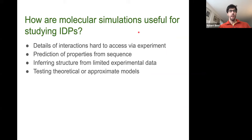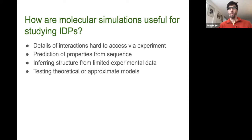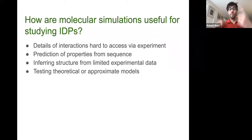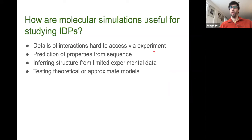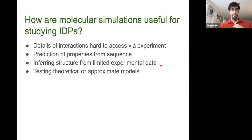One might ask how molecular simulations are useful for studying IDPs. The main reason is that disordered proteins are highly heterogeneous — they populate very diverse conformations — which makes them very challenging to study by experiment, because any observable you measure is generally averaged over all of these rapidly interconverting conformations. You can't uniquely pin down a structure as you would for a folded protein. Simulations might also allow you to predict what the properties of an IDP would be from its sequence, and what its function might be.